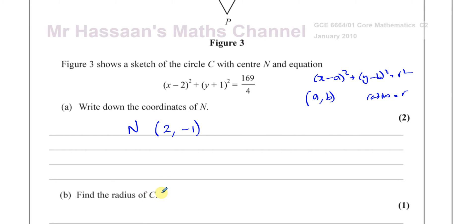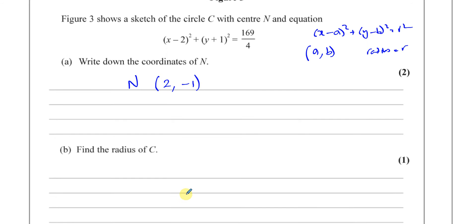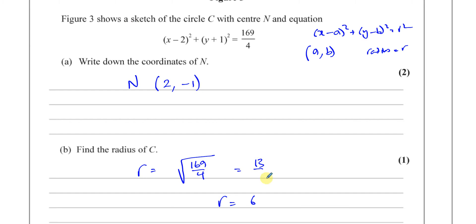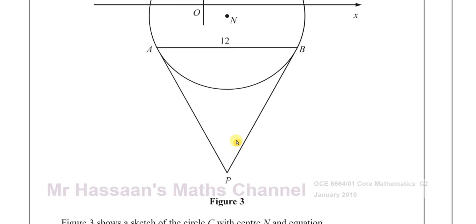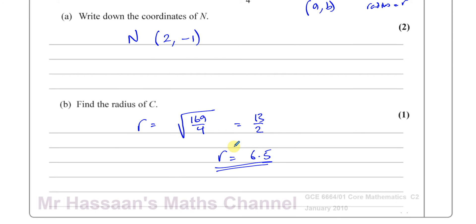For part b, they ask us to find the radius. The radius is the square root of 169/4. Both of those are square numbers: the square root of 169 is 13, and the square root of 4 is 2, so that gives us 13/2, which is 6.5. So the radius of circle C is 6.5 units. That's the answer to parts a and b.